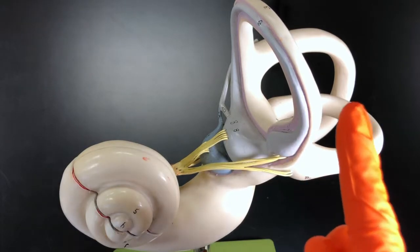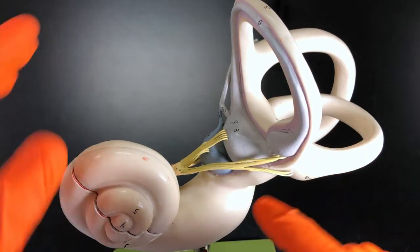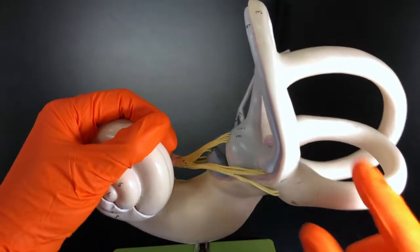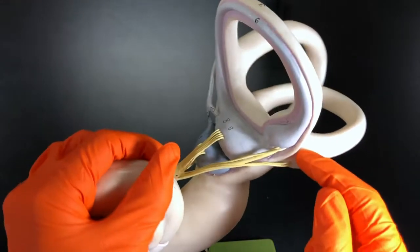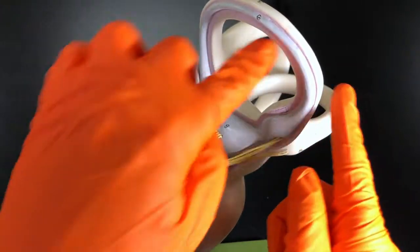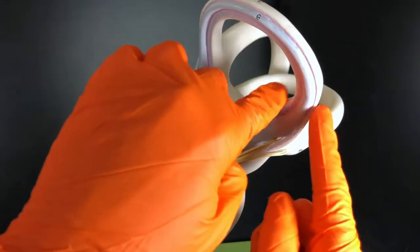And then at the base we have these bottle-shaped structures called ampulla—and that's a term that you'll see in other chapters as well. It just kind of describes this bulging area. Right here we have structures that will help our head detect rotational movement.